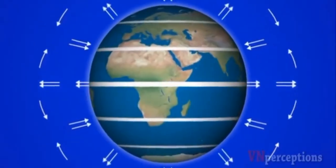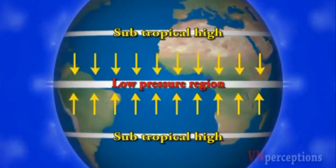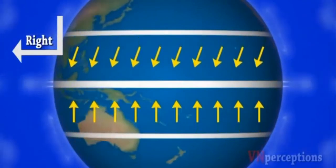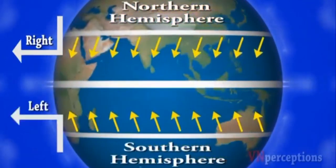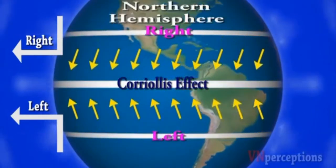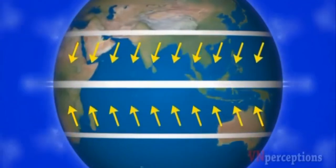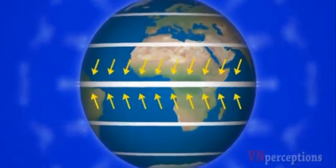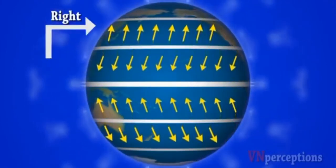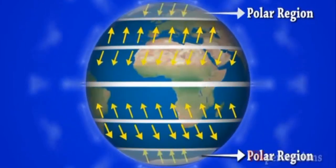On the surface of the Earth, winds move from high pressure to low pressure regions — from subtropical highs to the equatorial low. These winds bend to the right in the northern hemisphere and to the left in the southern hemisphere, described as the Coriolis effect. This bending occurs because the Earth is spherical and rotates from west to east. The same phenomena can be seen between 30 and 60 degrees north and south, and even at the polar regions.